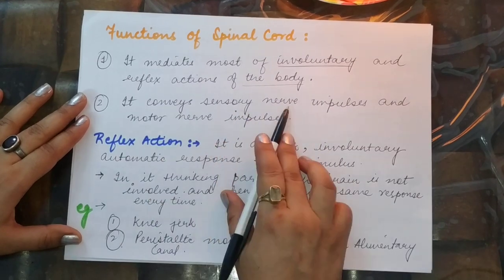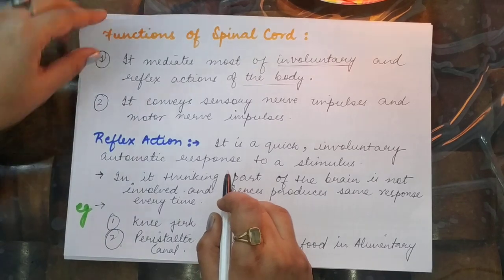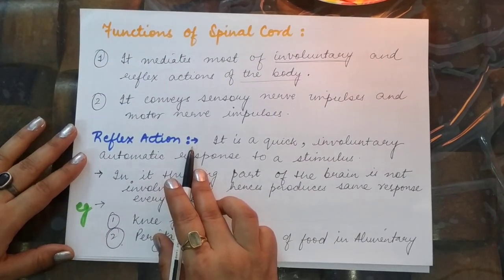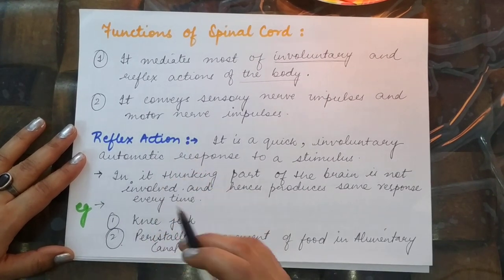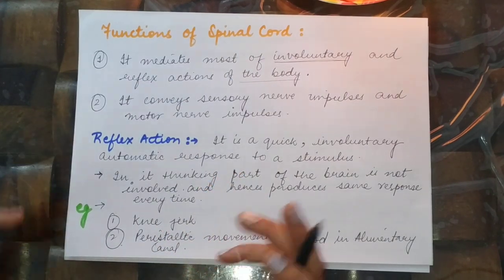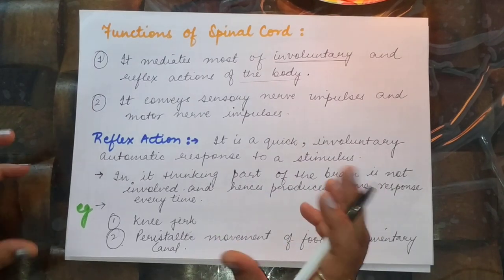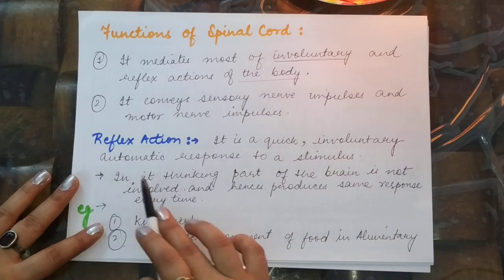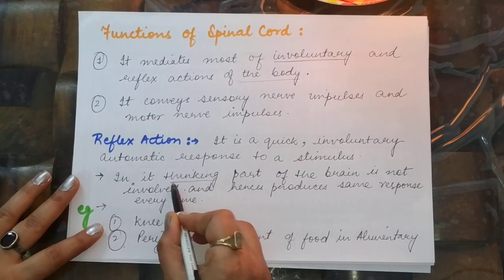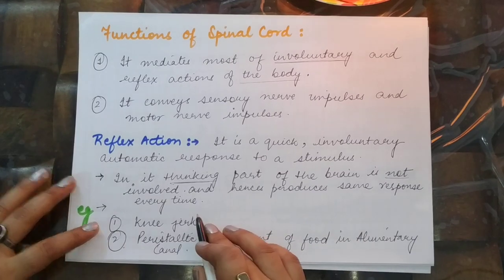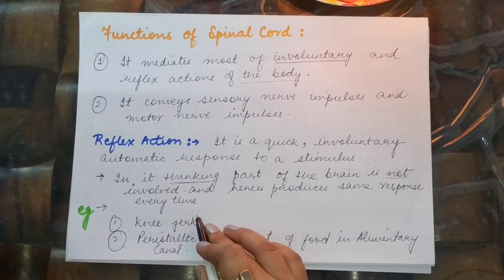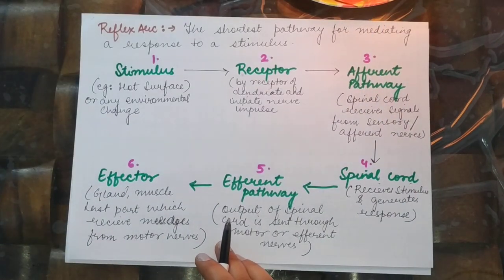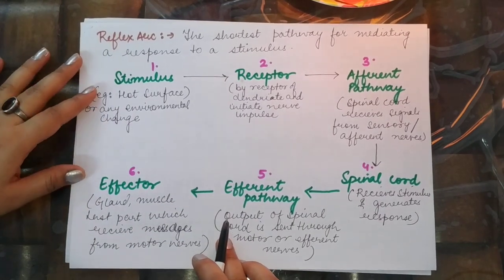An important function carried out by the spinal cord is the reflex action. In situations of shock or when the body must take a very quick decision without time to think, reflex action comes into play. It is a quick, involuntary, automatic response to a stimulus in which the thinking part of the brain is not involved, and hence produces the same response every time. Examples include the knee jerk, and the movement of food by peristalsis in the alimentary canal.